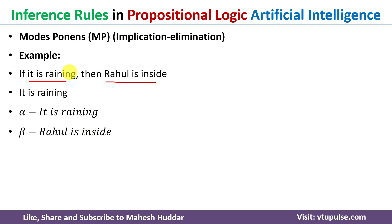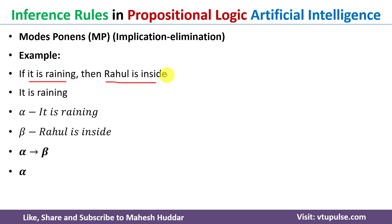We will convert these statements into propositional logic. 'If it is raining, then Rahul is inside' can be written as alpha implies beta. 'It is raining' is written as alpha. In propositional logic, whenever we are given a set of predicates, each of those predicates is considered true.